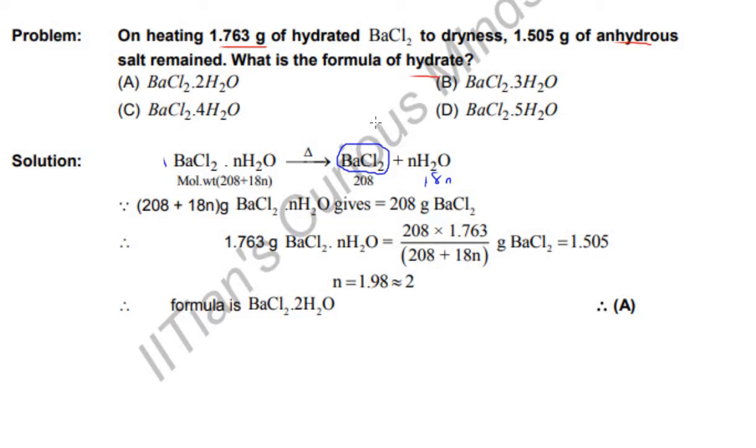And on the given data, 1.763 gram of the hydrated barium chloride gives 1.505 gram anhydrous BaCl2. Anhydrous is this.